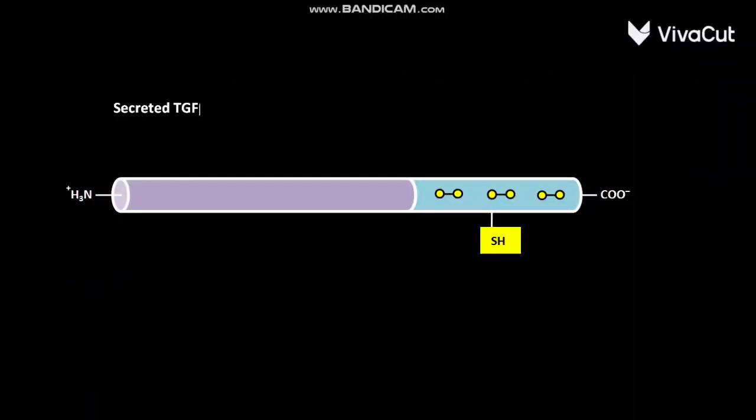This is the secreted TGF beta precursor. Although monomeric form of TGF beta precursor is shown in this video, the secreted TGF beta precursor is dimeric inside the cell.